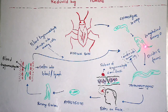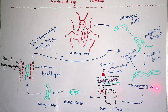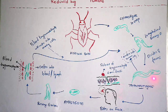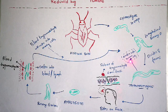After this division takes place, it forms trypomastigotes — that is, the daughter individuals are trypomastigotes. These trypomastigotes will not divide further, but they can enter into human cells.